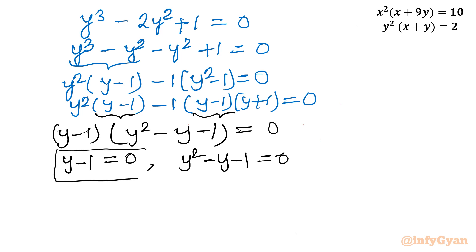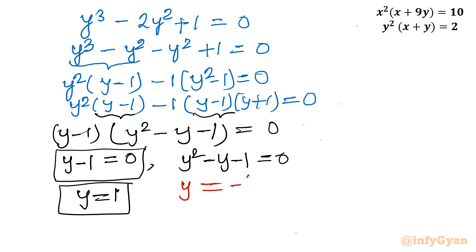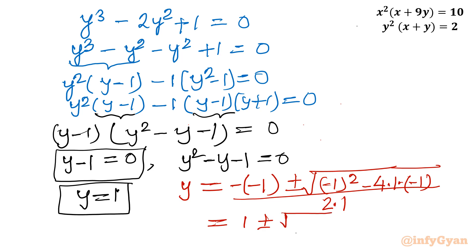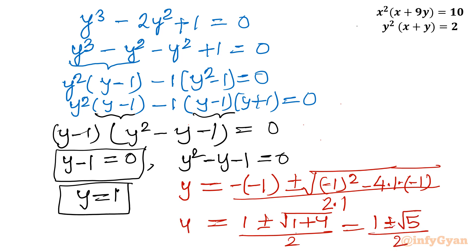From the first factor, y = 1. For the quadratic y² − y − 1 = 0, applying the quadratic formula (Shridharacharya formula): y = (−(−1) ± √((−1)² − 4·1·(−1))) / (2·1) = (1 ± √(1 + 4)) / 2 = (1 ± √5) / 2. So there are 3 values of y.